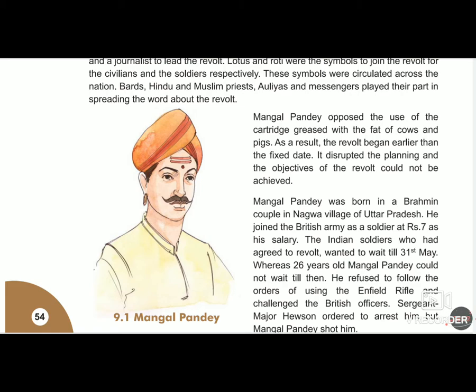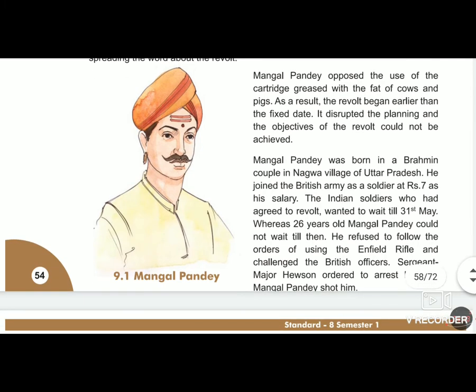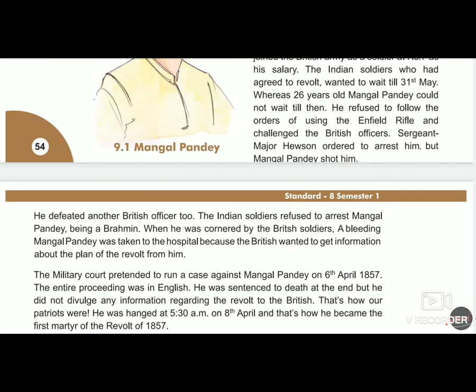The Indian soldiers who had agreed to revolt wanted to wait until 31st May, but 26-year-old Mangal Pandey could not wait. He refused to follow the orders to use the Enfield rifle and challenged the British officers. Sergeant Major Hewson ordered his arrest, but Mangal Pandey shot himself. He defeated another British officer too. The Indian soldiers refused to arrest Mangal Pandey because he was a Brahmin.